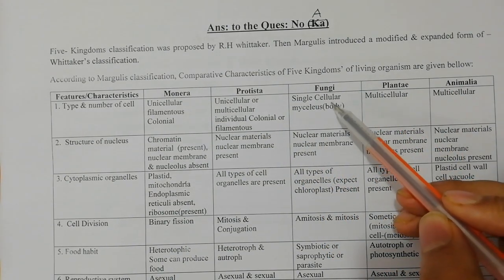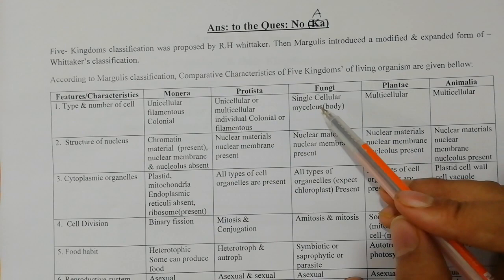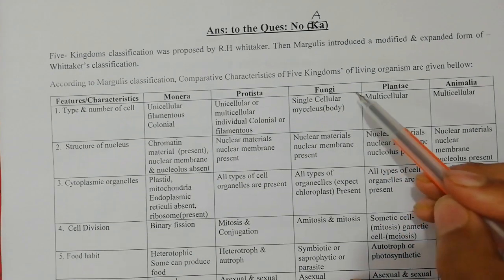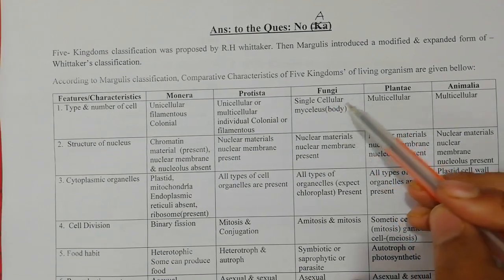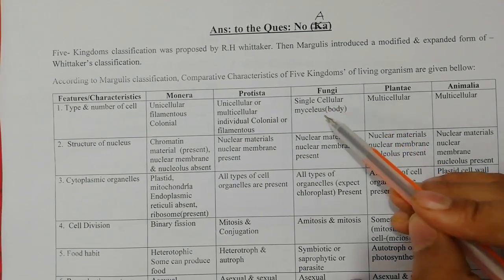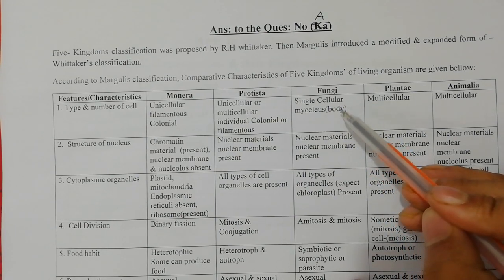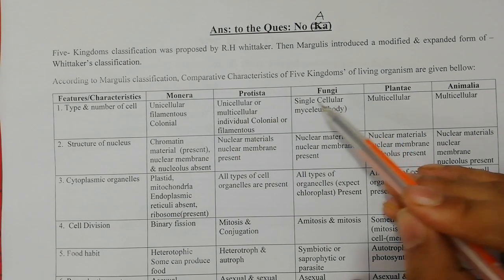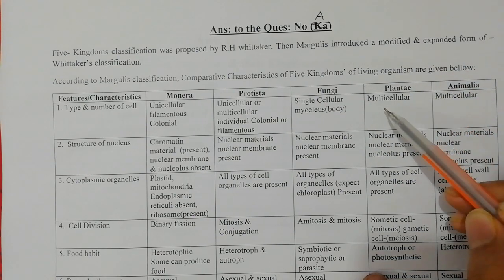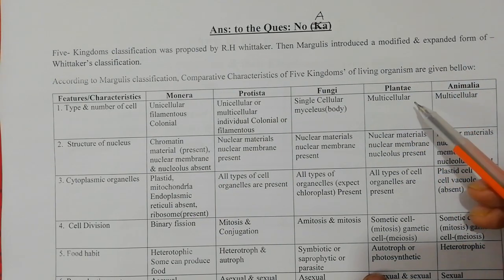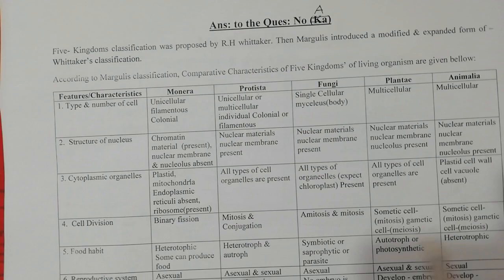Fungi have a single-cell or mycelium body structure. Plants are multicellular, and animals are also multicellular.